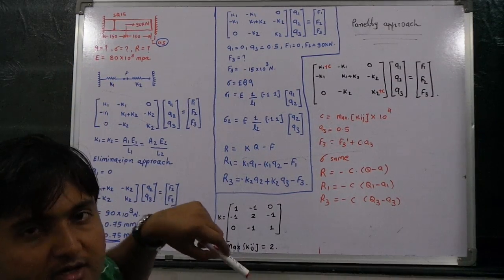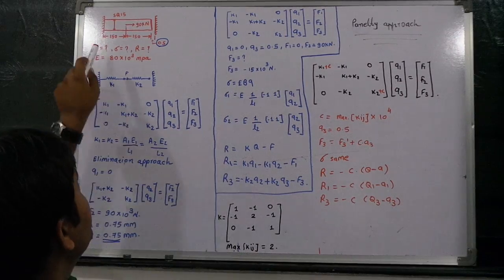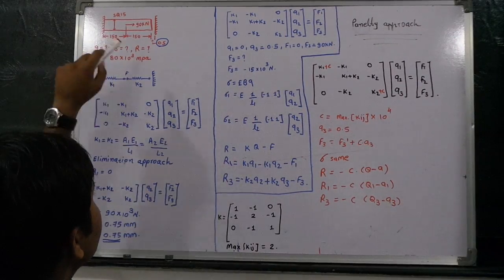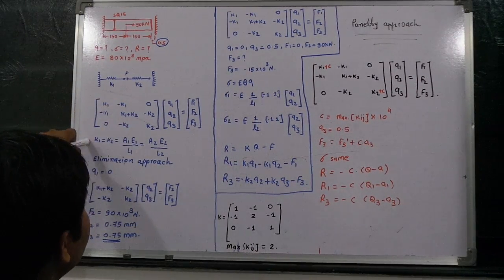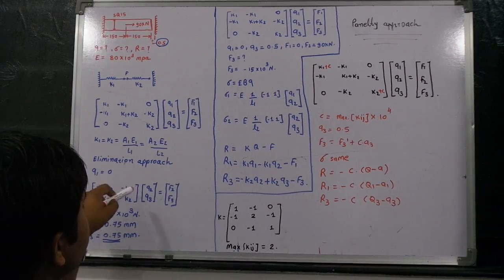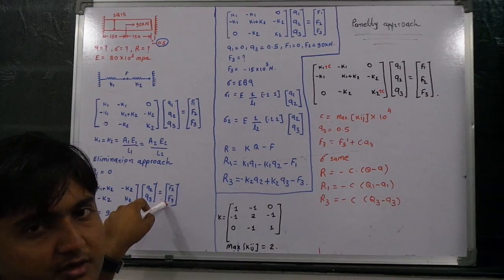10 raise to 6 megapascal, we need to multiply it with 10 raise to 6, so it will be 80 multiplied by 10 raise to 9, ultimately divided by L1. L1 and L2 are same, which is 150.